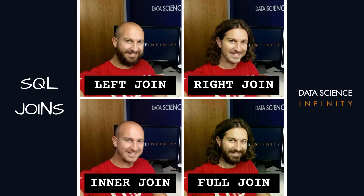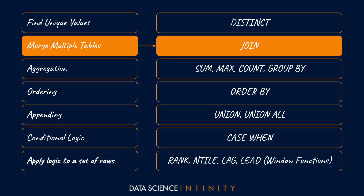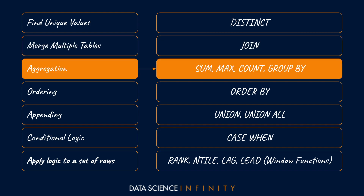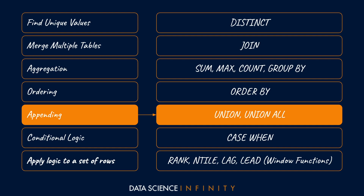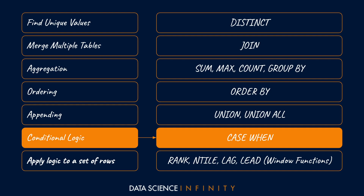We can aggregate or summarize data using a combination of GROUP BY and functions like SUM — so if we were a grocery store chain, we could sum up sales by product, product area, week, or store. We can order data using ORDER BY, append multiple portions of data together using UNION, and apply conditional logic using the CASE WHEN statement to create new columns. For example, we could categorize each store as a high, medium, or low sales store based on defined logic.